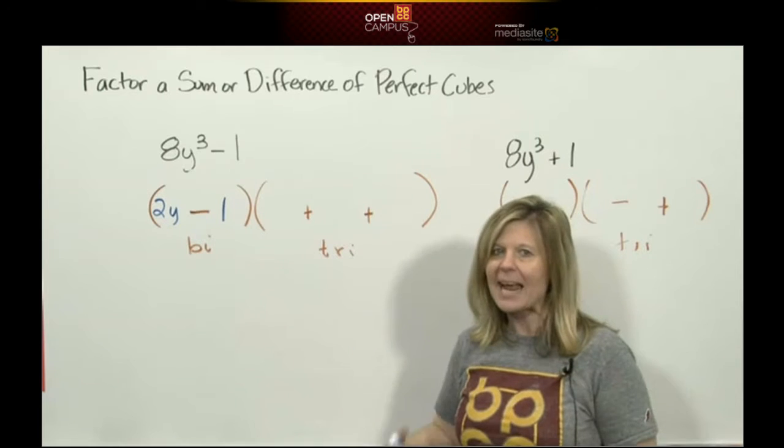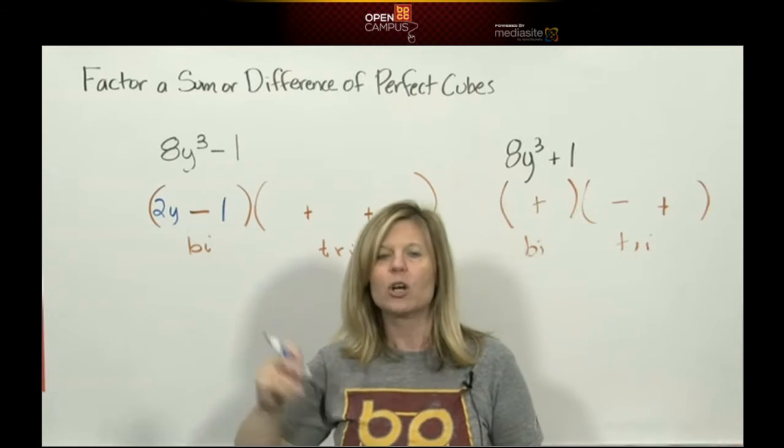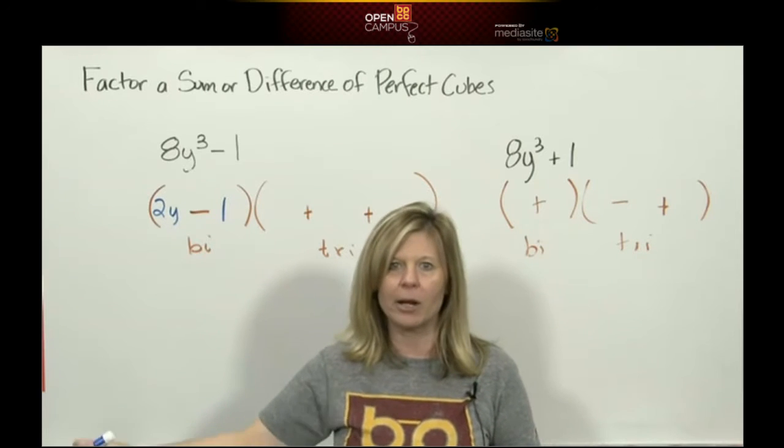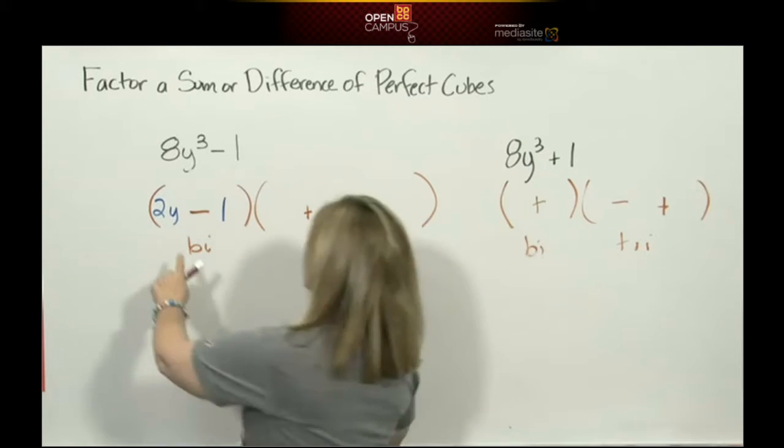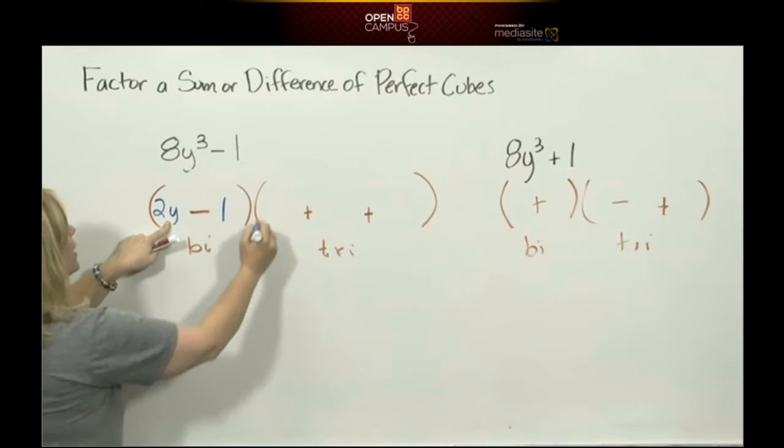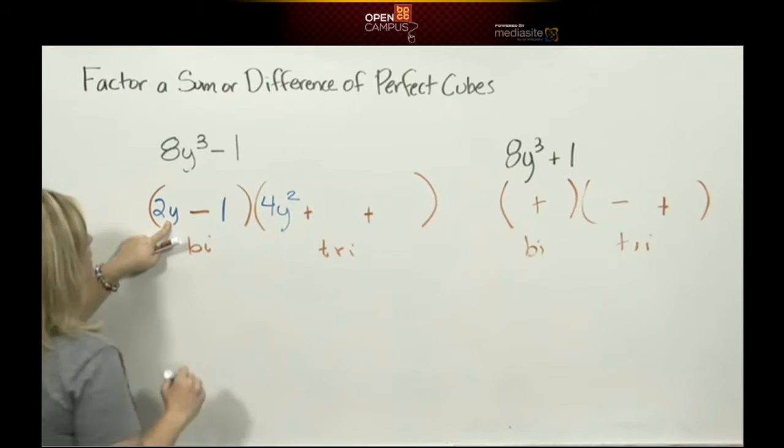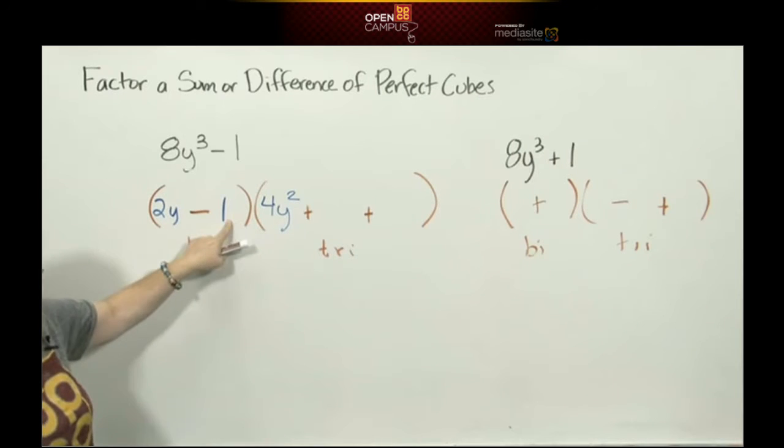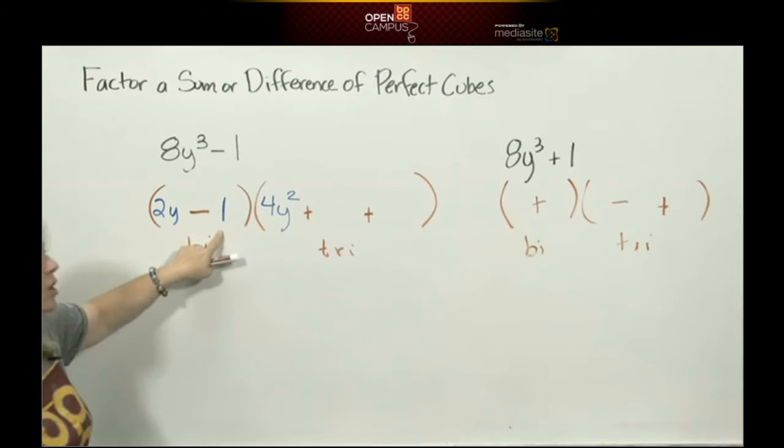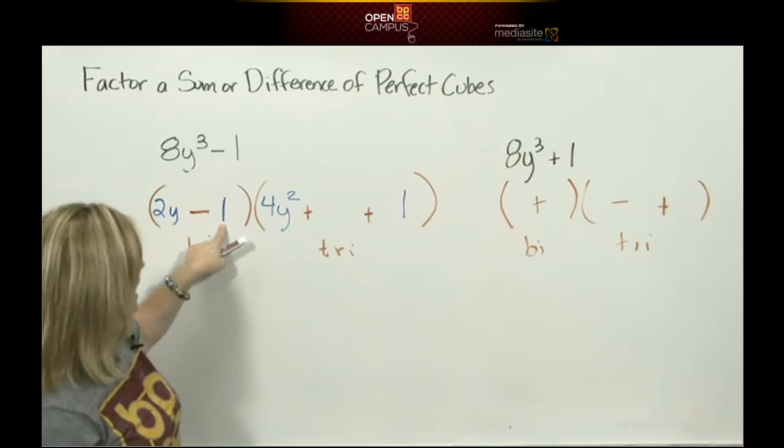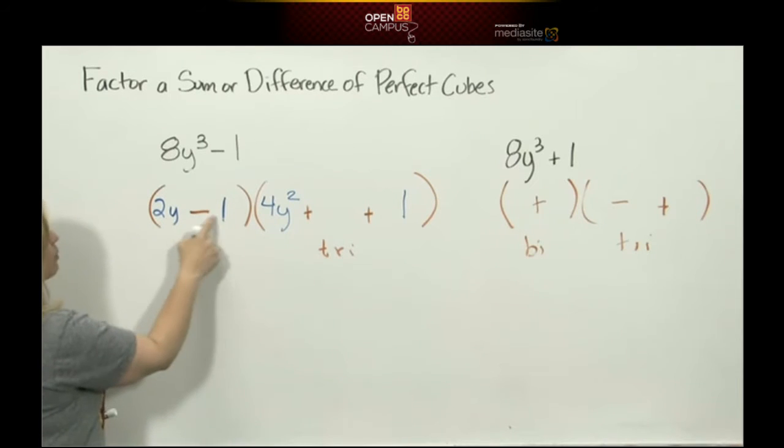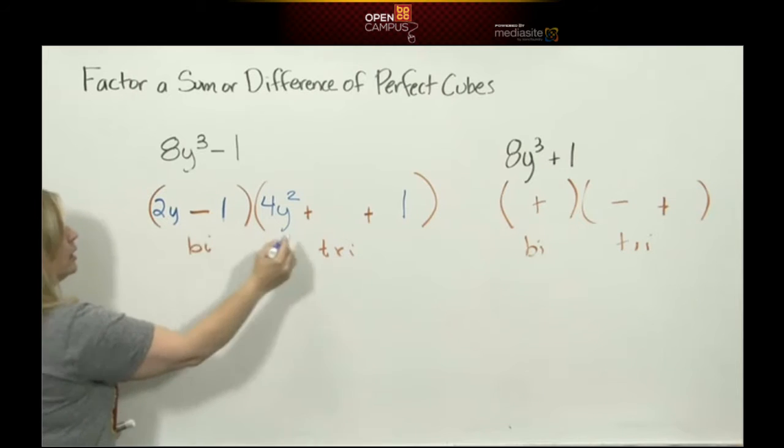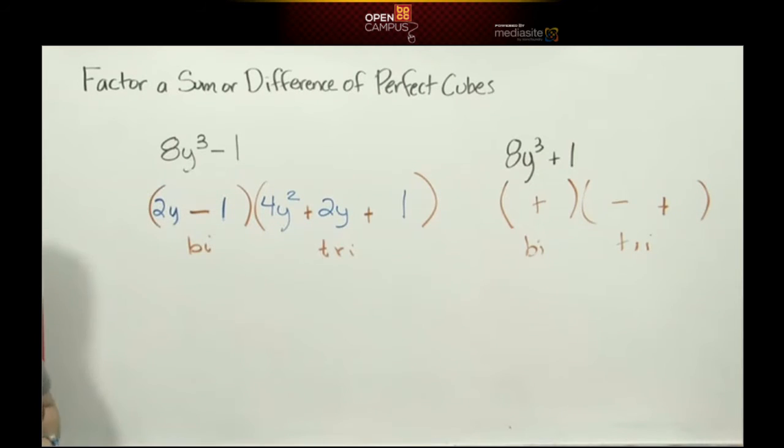Once you get the binomial you use these terms to make the trinomial. And I have my class say it out loud over and over again: square the first, square the last, multiply to make the middle. Say it with me. Square the first, square the last, multiply to make the middle. Square this. What is 2y times 2y? 4y squared. It was first. I put that first. Square the last. Don't look at the symbol. Just look at the number. What's 1 times 1? 1. I put that in the last spot. It's the middle that there's no thinking. You take these terms and multiply them together. 2y times 1 is 2y. If you want to check yourself, you know you can do multiplication.